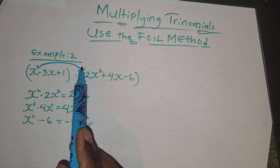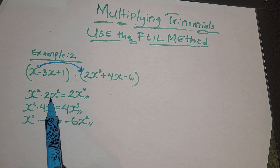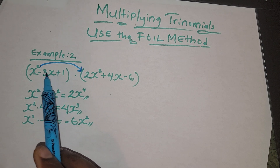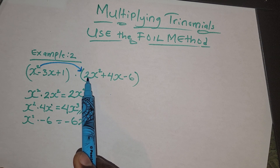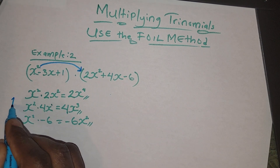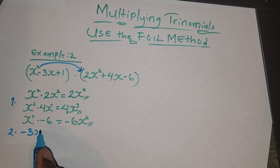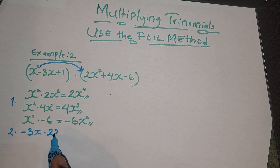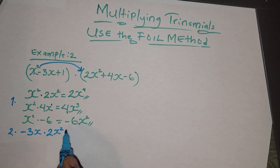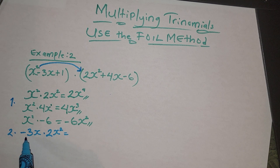So we take the first term and multiply everything in that parenthesis by x². Then we move to the next section, which is -3x. So -3x times 2x²: 3 times 2 is 6, and negative times positive is negative, giving us -6.